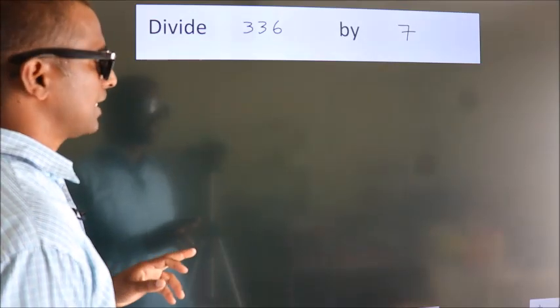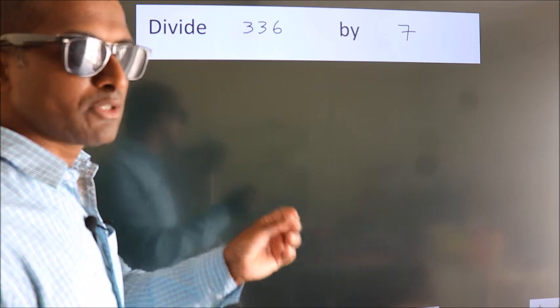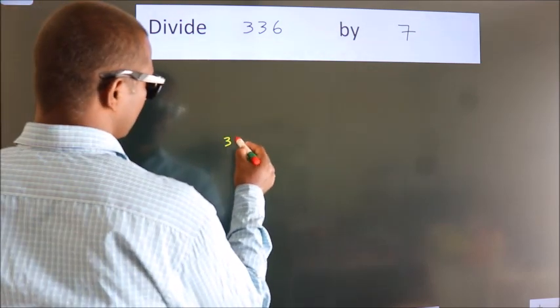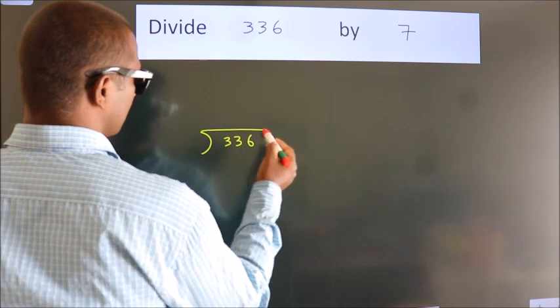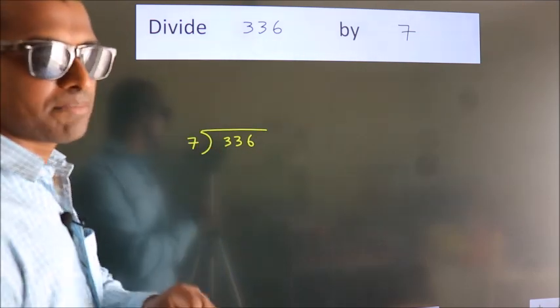Divide 336 by 7. To do this division we should frame it in this way. 336 here, 7 here. This is your step 1.